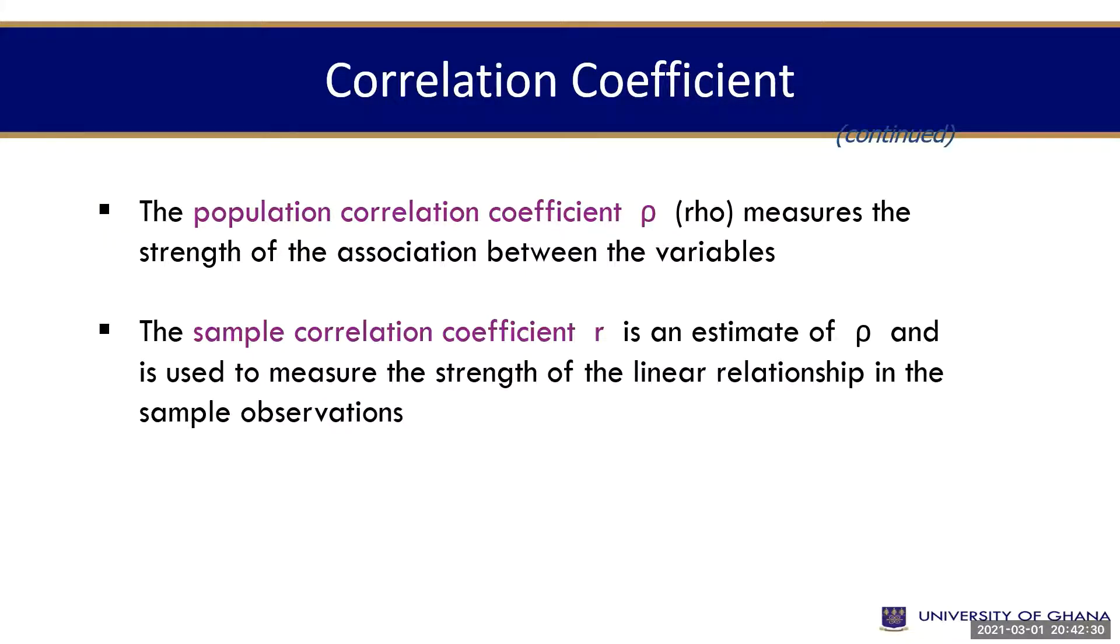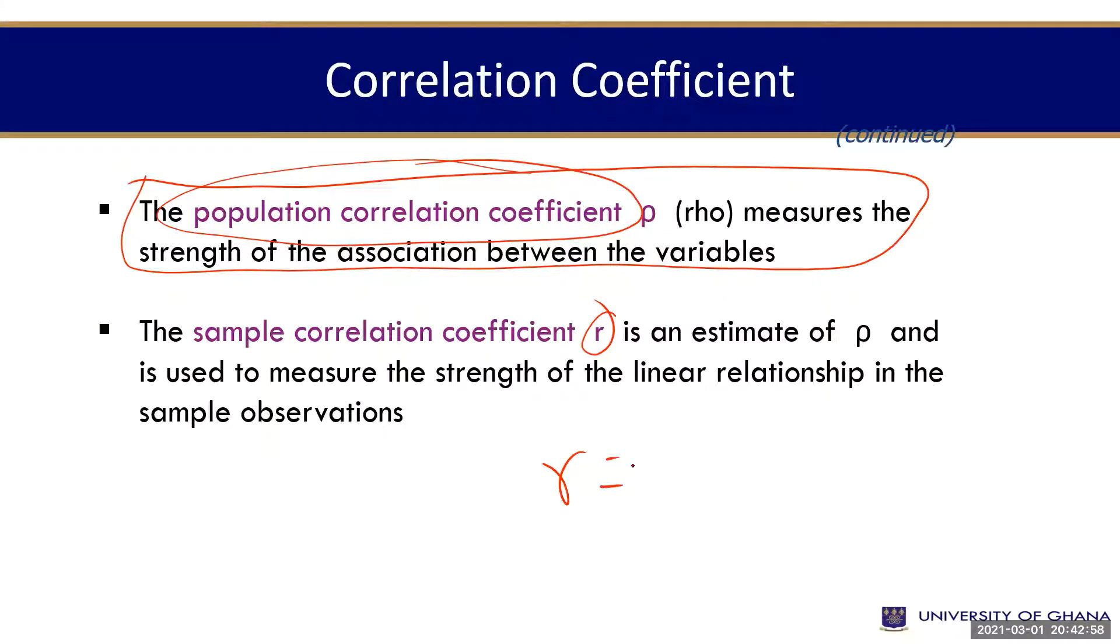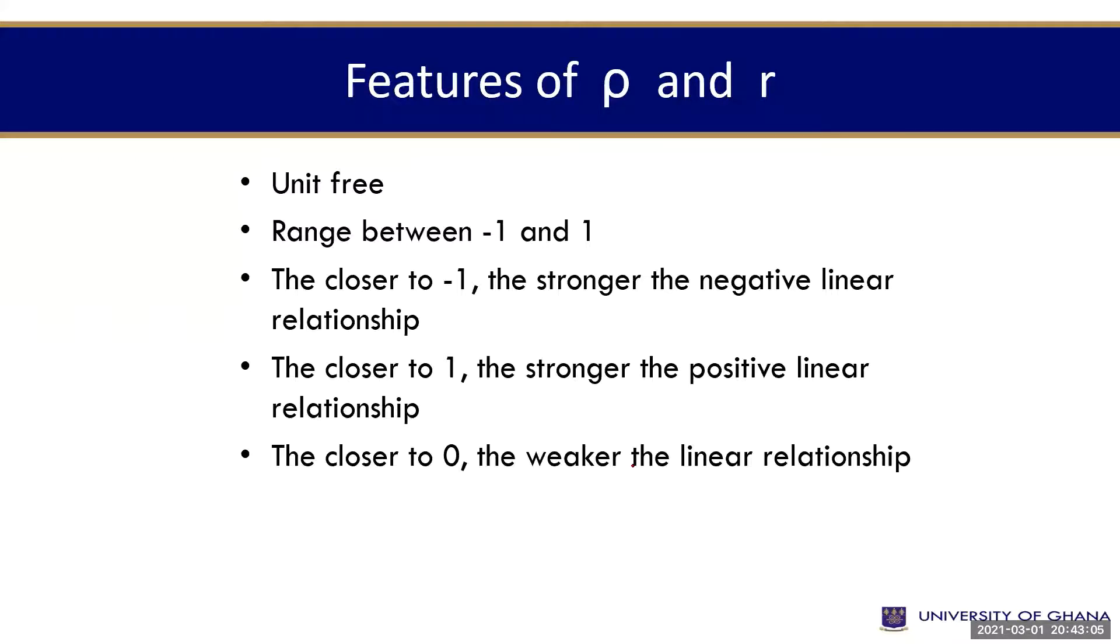By way of doing that, we need to find or compute what we call the correlation coefficient, which is defined as R. You don't worry about the population correlation coefficient. We'll be looking at the sample correlation coefficient. All this while we've been using sampling. Of course, it's difficult to get the exact population. So, you use a representation of the population as a sample. So, R is called the sample correlation coefficient.